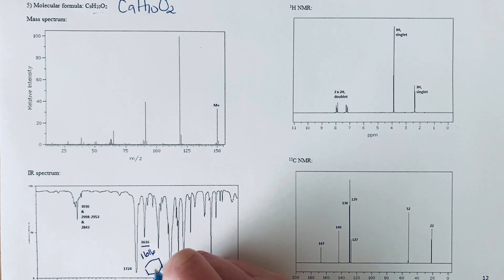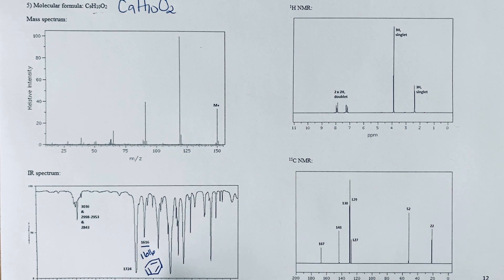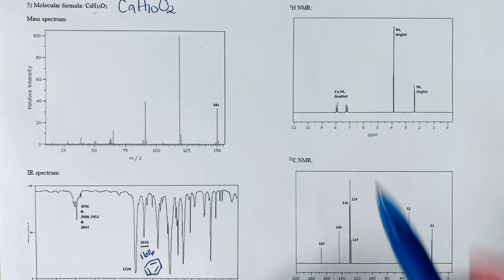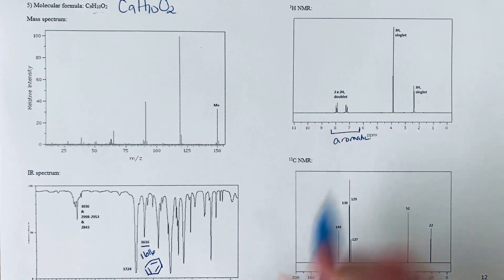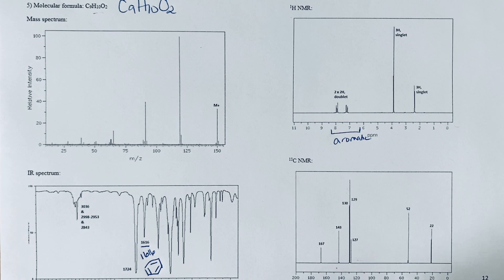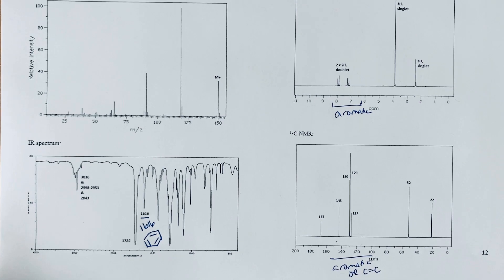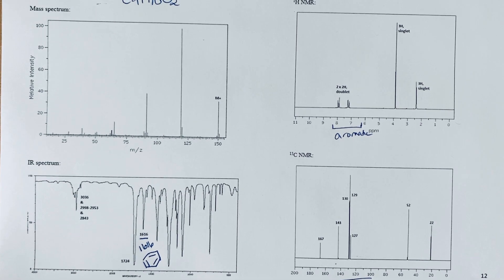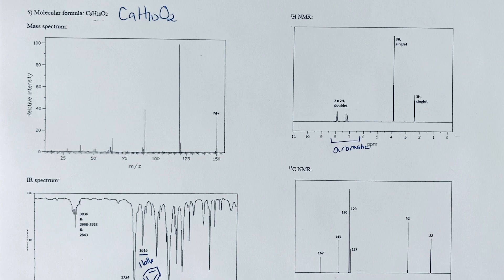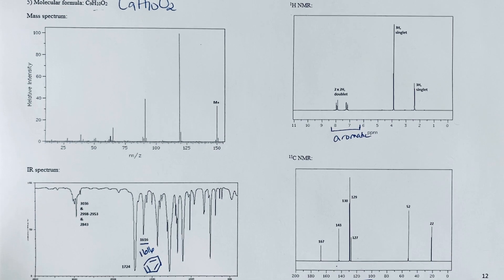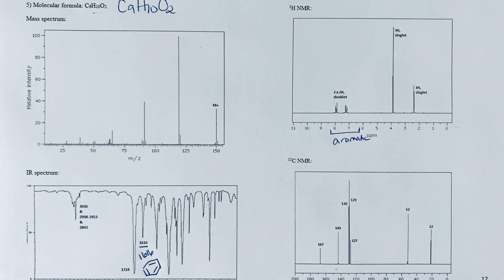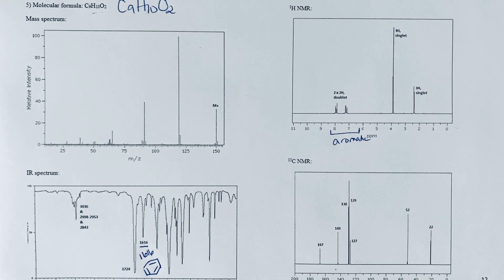Then I'm going to quickly check the proton and carbon just to make sure I'm not getting off track. I'm going to look in the aromatic region of both of those to make sure that I see signals. I see them here in the proton and I see some signals in this aromatic region—aromatic or alkene could also show up in that same region of that carbon-13. We definitely see stuff that's consistent.